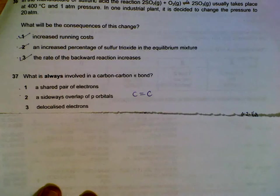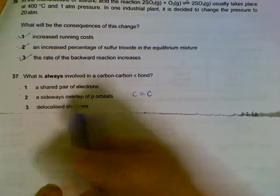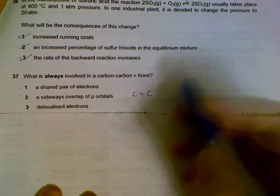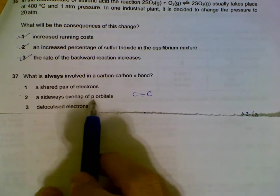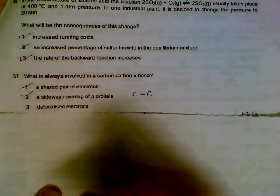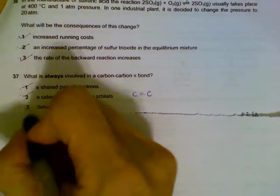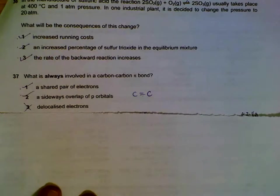Question 37: What is always involved in the carbon-carbon pi bond? We will have a shared pair of electrons. And pi bonds are formed by P orbitals sideways overlap, so one and two are correct. These electrons are not considered delocalized; they are still considered localized, so statement three is wrong.